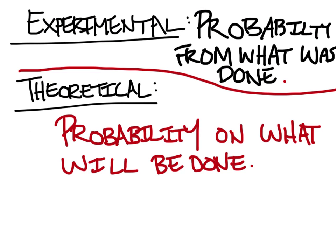A better way to remember this: experimental probability is the probability from what was done, so it's based on something that has already happened. Theoretical probability is probability based on what will be done. Let's look at an example.